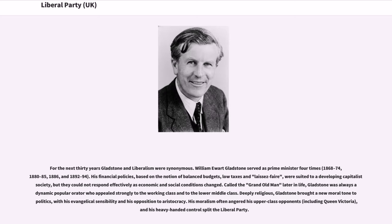The Whig-radical amalgam could not become a true modern political party while it was dominated by aristocrats. It was not until the departure of Russell and Palmerston that Gladstone could become the first leader of the modern Liberal Party — brought about by Palmerston's death in 1865 and Russell's retirement in 1868. After a brief Conservative government during which the Second Reform Act was passed, Gladstone won a huge victory at the 1868 election and formed the first Liberal government. For the next thirty years Gladstone and Liberalism were synonymous, with Gladstone serving as Prime Minister four times: 1868–74, 1880–85, 1886, and 1892–94. His financial policies, based on balanced budgets, low taxes, and laissez-faire, were suited to a developing capitalist society but could not respond effectively as economic and social conditions changed.